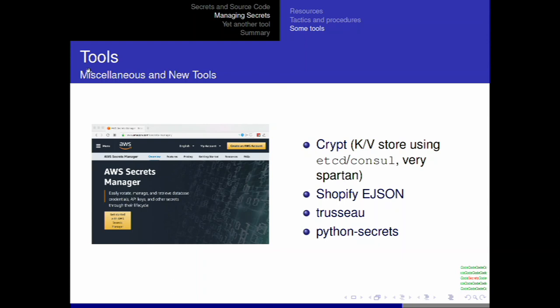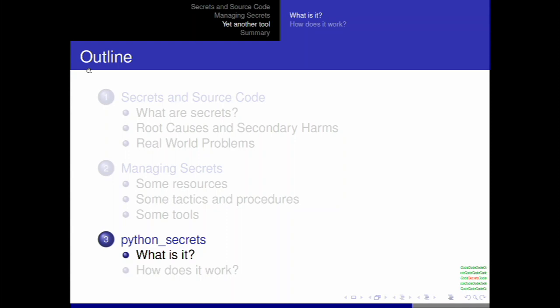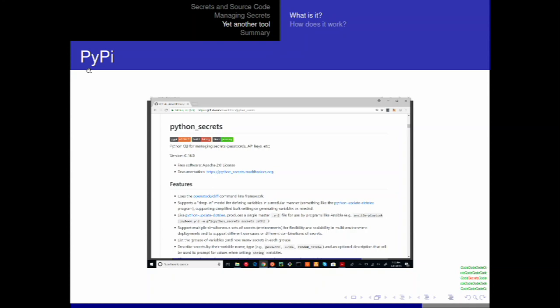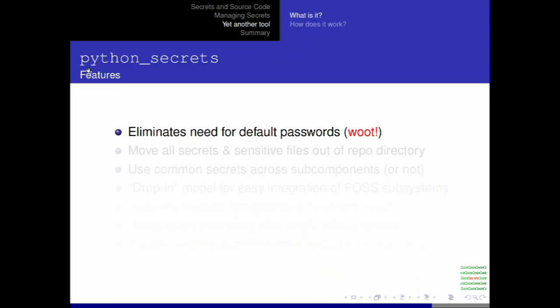Then there's Python secrets, which is one of the main reasons we're here. It's available on PyPI now. The core feature for purposes of this talk is that it allows you to remove the need for default passwords — you can have an open source product where the first thing that happens is keys and passwords get generated. There is no default, or it doesn't need to be. It also helps with moving secrets out of the source code base and managing them in a way that accommodates multiple open source components.